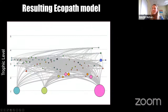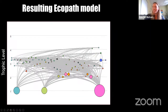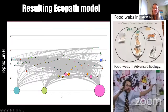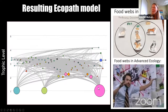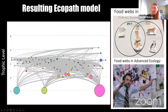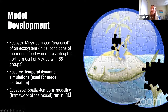What does that result in in this Ecopath model? Trophic level is on the y-axis, and mainly what I want to convey here is that everything's connected. We have all these gray lines indicating either food web interactions — the trophic interactions between species — or the fleets fishing on these different species. With that, we can go into Ecosim to calibrate the model, which is the temporal dynamic simulations of the modeling.